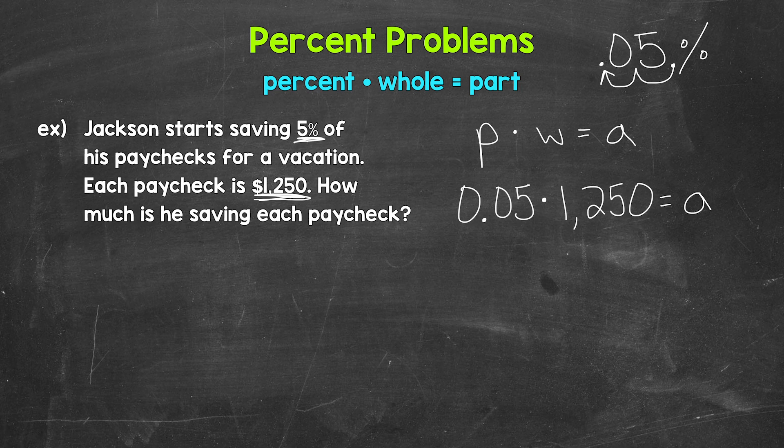We just have a one step equation here. We need to isolate the variable of a, which is already isolated on the right side of the equation. So all we need to do is multiply here. We have 5 hundredths times 1,250. That gives us 62 and 5 tenths, 62.5. And that's the part.